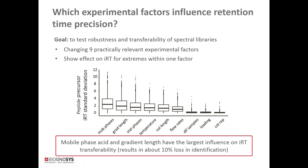We investigated which experimental factors influence retention time precision by changing nine relevant factors such as mobile phase, gradient length, and others, looking at extremes within each factor. The conclusion is that iRT values are generally transferable across a wide range of experimental conditions; however, the best results are achieved when library generation and analytical measurements are performed on the same system. Mobile phase composition and gradient length have the largest influence on iRT transferability.